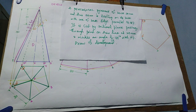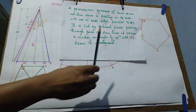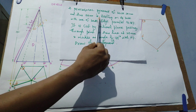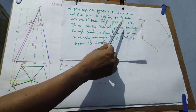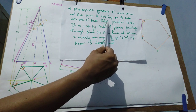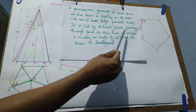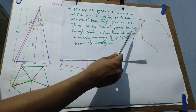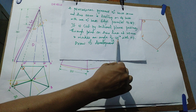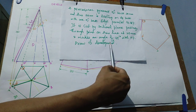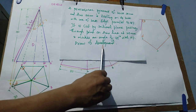Good morning students. Today we are going to draw the development of the pentagonal pyramid. The question given is: a pentagonal pyramid of base length 30 mm and axis length 70 mm is resting on its base on a horizontal plane with one of the base edges parallel to the vertical plane, and it is cut by a sectional plane passing through the point on the axis line at 20 mm from the apex and makes an angle of 45 degrees with the horizontal plane. Draw the development of that pyramid.